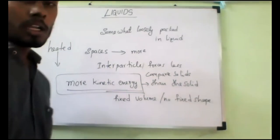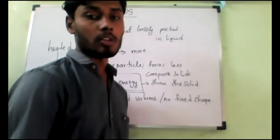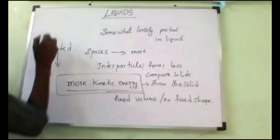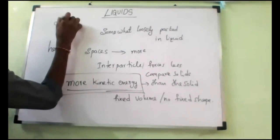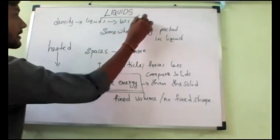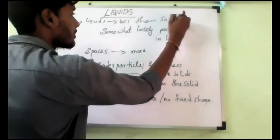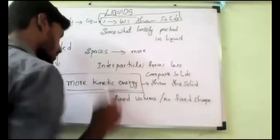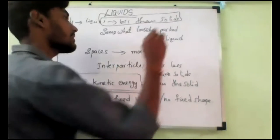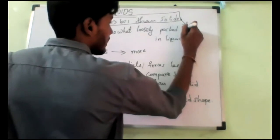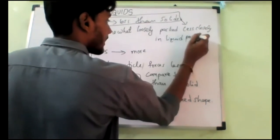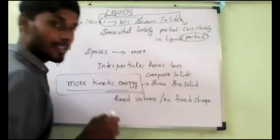Now coming to density. Density of liquids is less or more compared to solids? Density of liquids is less than solids — that is what you should remember. Compared to solid density, liquid density is less. Why? Because they are less closely packed. Less closely packed, so they have less density.